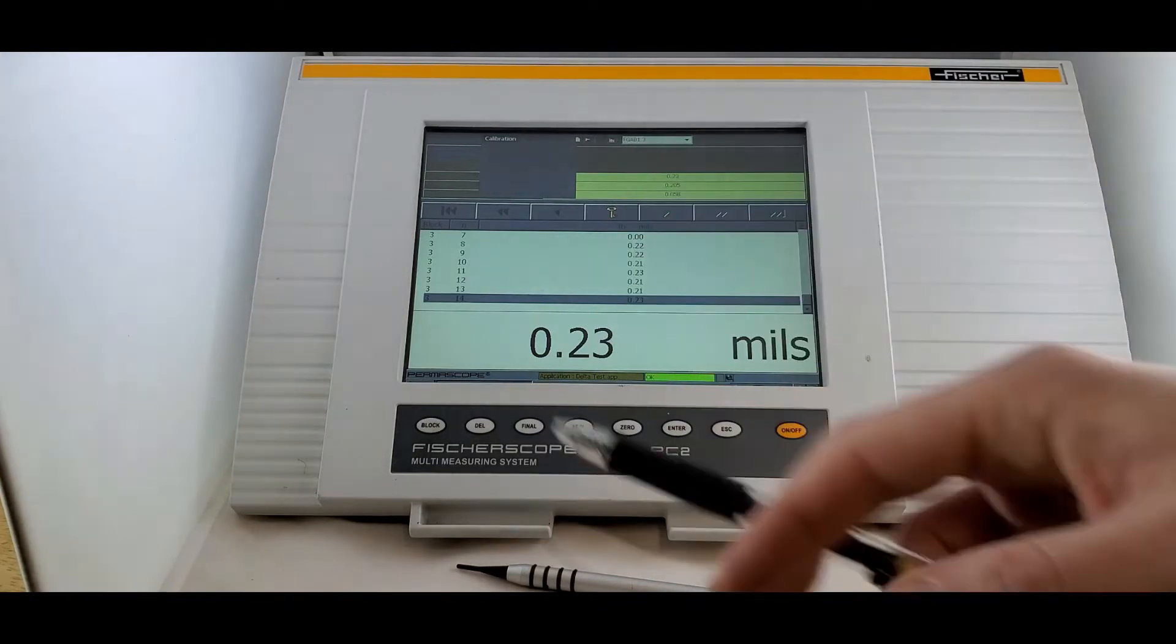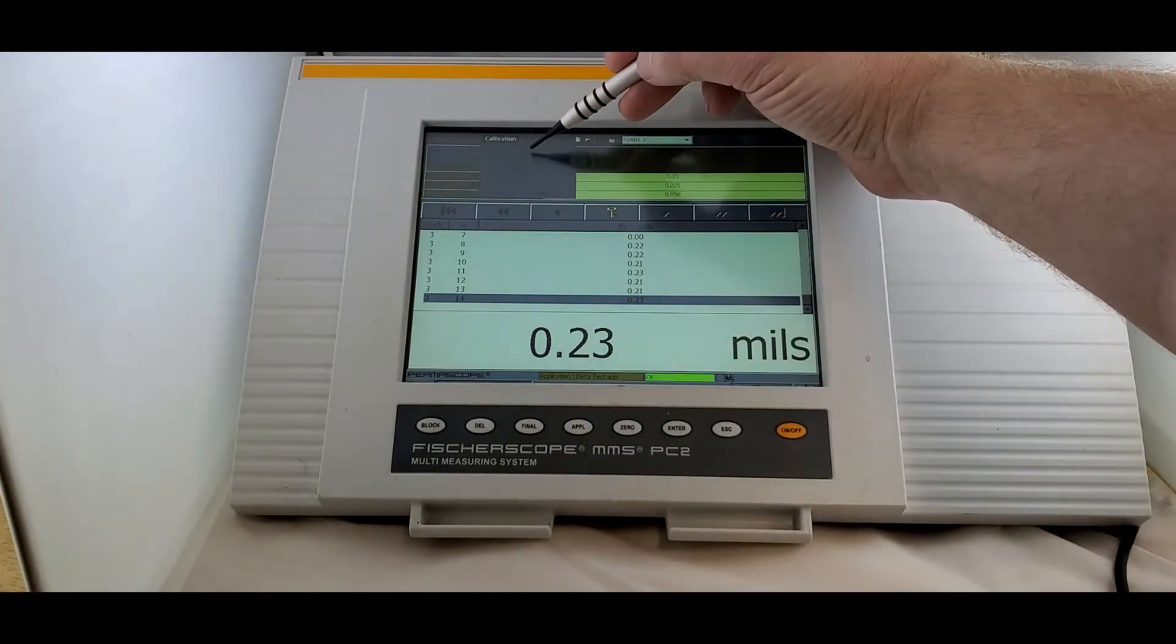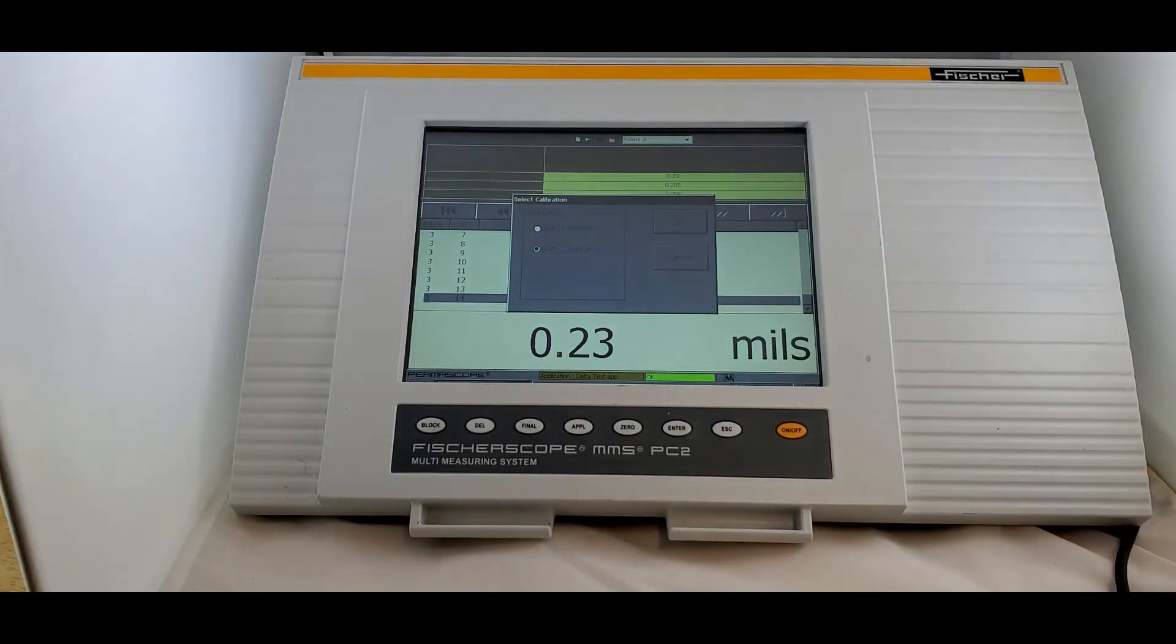We're going to come up here to calibration. And we want to do a corrective calibration. What a corrective calibration does is it changes and corrects how the unit measures your coating on the substrate that we've put our coating on. Today, we're going to do this with magnetic induction. Process is exactly the same for eddy current when we're doing any of our non-ferrous metals.